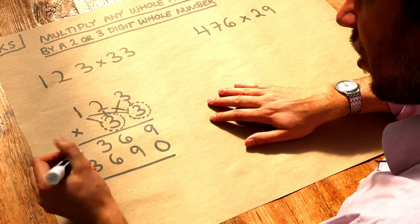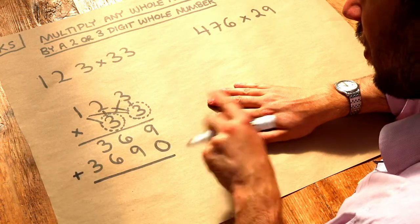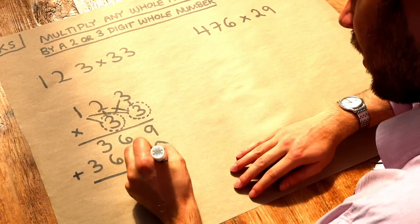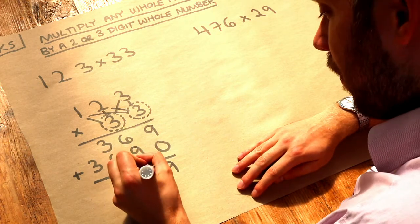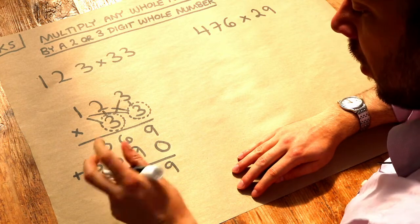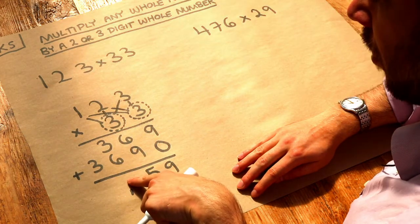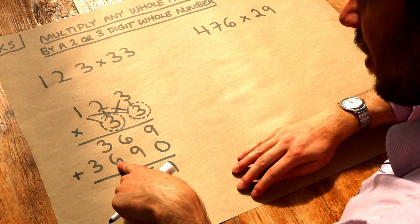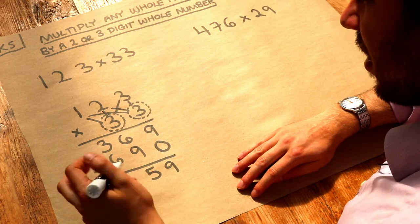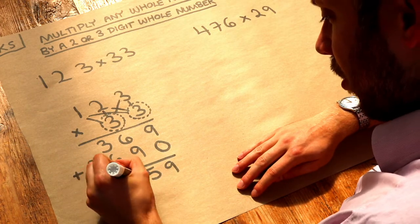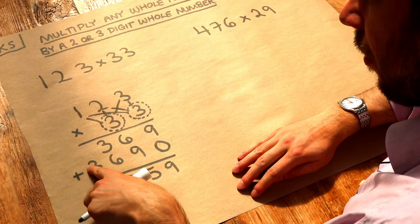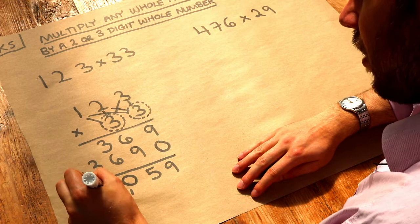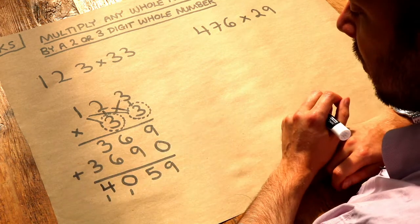So now we just add these two numbers. So we do nine plus zero is nine. We do six plus nine is 15. So we put the five there and we carry the one. I put the carry underneath where I'm going to put my next number. Three plus six is nine plus the one is ten. So we put the zero here, the units digit of ten, and carry the one. And then we've got the three plus that carried one is four. So we get 4059.